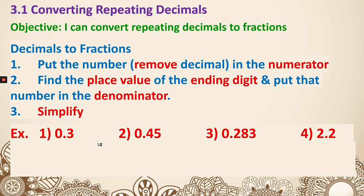For example, number 1, 0.3. That is called the tenths digit, so we remove the decimal and leave the 3 on top. Since it's the tenths place, we put 10 on the bottom. 3 over 10, there's nothing to simplify. Number 2, 0.45. Remove the decimal point. Since that is the hundredths place, we put 100 on the bottom. The top and bottom can both be divided by 5, leaving us 9 and 20, so it simplifies to 9 over 20.